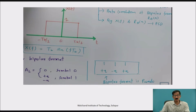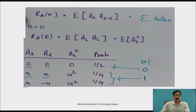Now let us find the autocorrelation for the bipolar format. This bipolar format has three levels: plus 1, minus 1, and 0 — that is, in terms of amplitude, plus A, minus A, or 0. So there are three symbols. A_L is the amplitude at the Lth level: 0 for symbol 0, and plus A or minus A for symbol 1. Autocorrelation R_A(N) = E[A_L · A_(L−N)]. Putting N = 0, R_A(0) = E[A_L²].